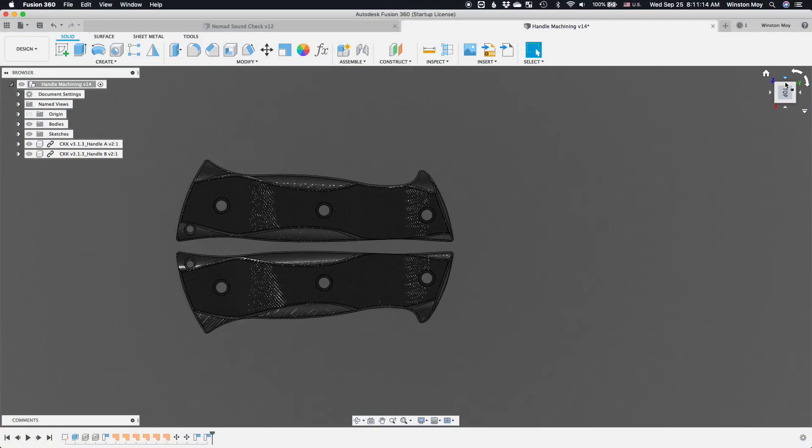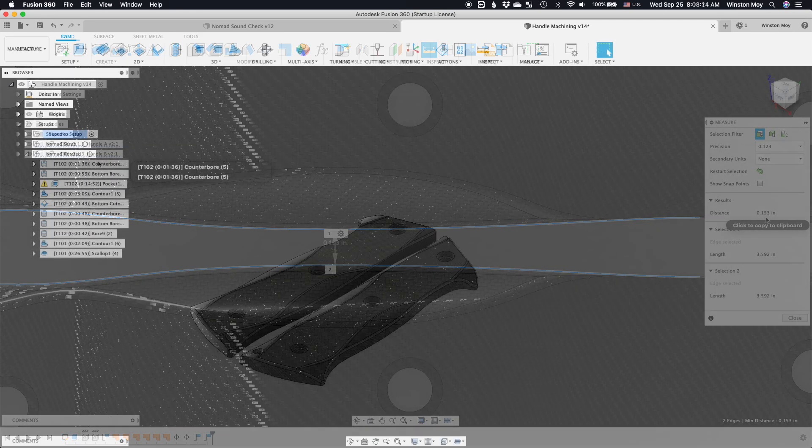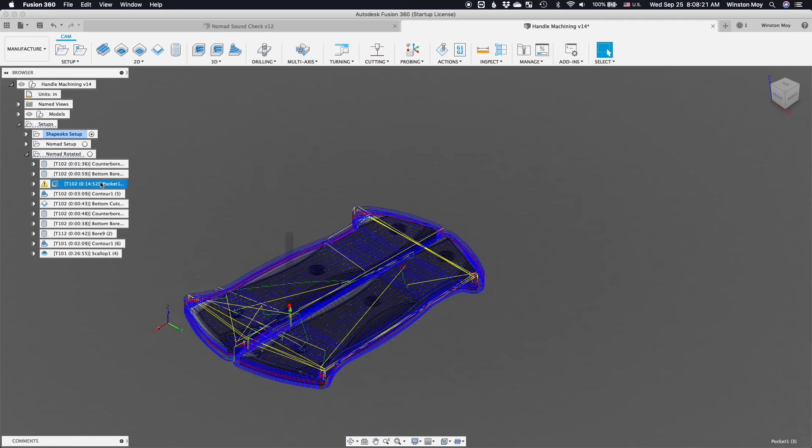I have my fusion models of these scales set up next to each other with just enough room for an endmill to pass between them. The first thing I'll apply is some boring operations to machine the holes for my handle hardware - one for the counterbore, one for the through hole.